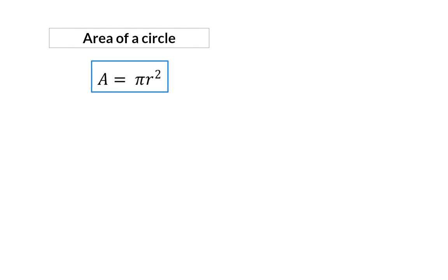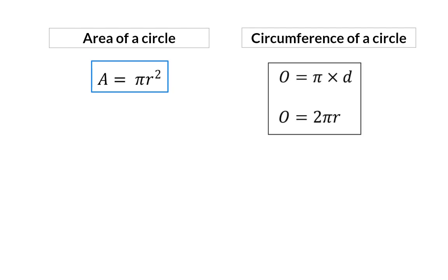Now I need to remind you that we've already had a look at the circumference of a circle. Here the formula is pi times diameter, and we saw that the diameter is 2 times the radius.